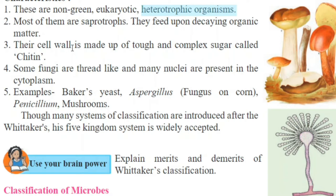Third characteristic: their cell wall is made up of a tough and complex sugar called chitin — both pronunciations are correct. Cell wall is made up of chitin. Some fungi are thread-like and many nuclei are present in the cytoplasm. Examples include baker's yeast, Aspergillus — a fungus which grows on corn — Penicillium, and mushrooms. These are the examples of fungi.